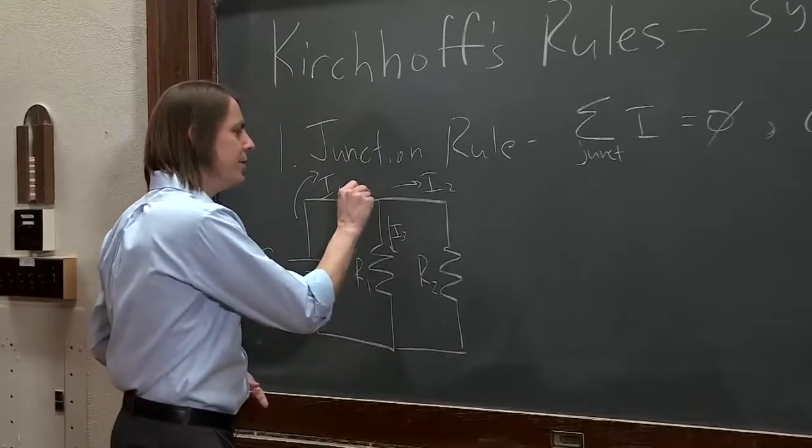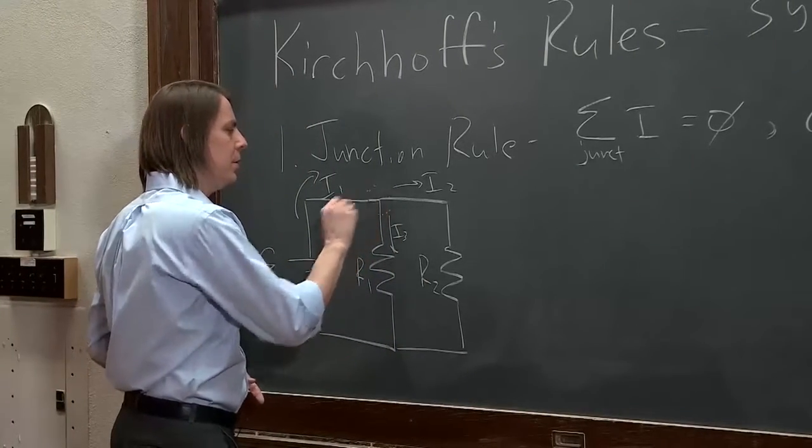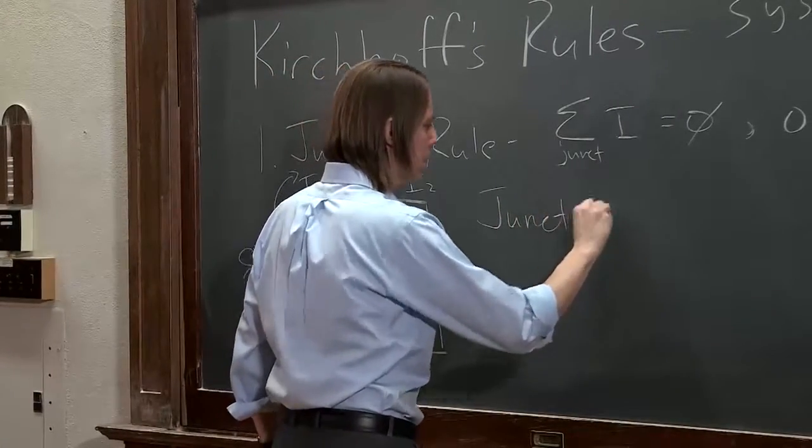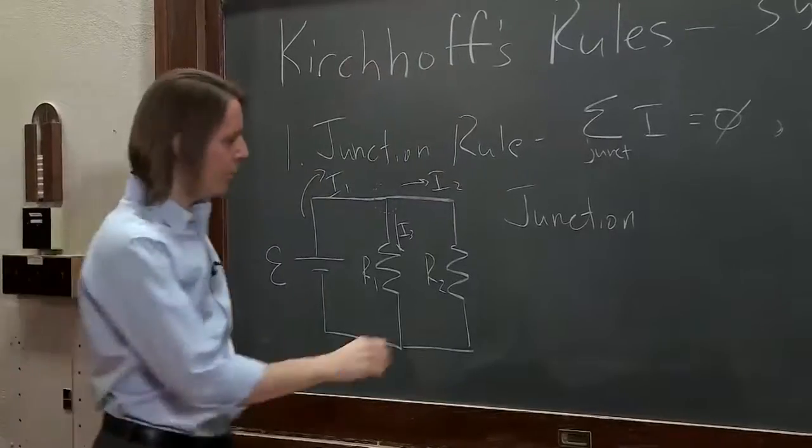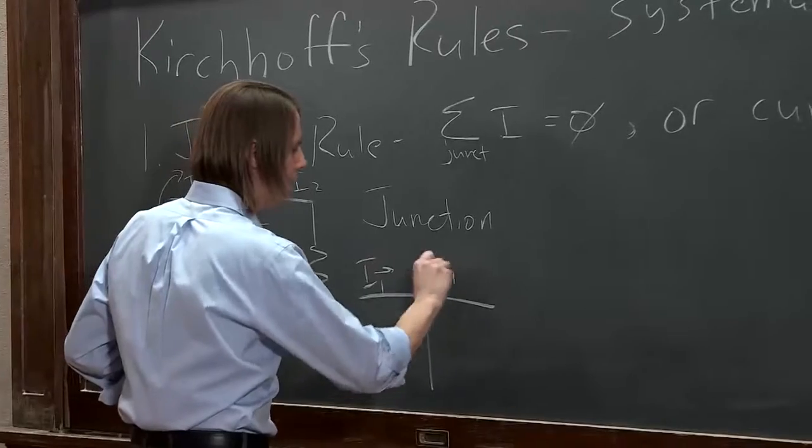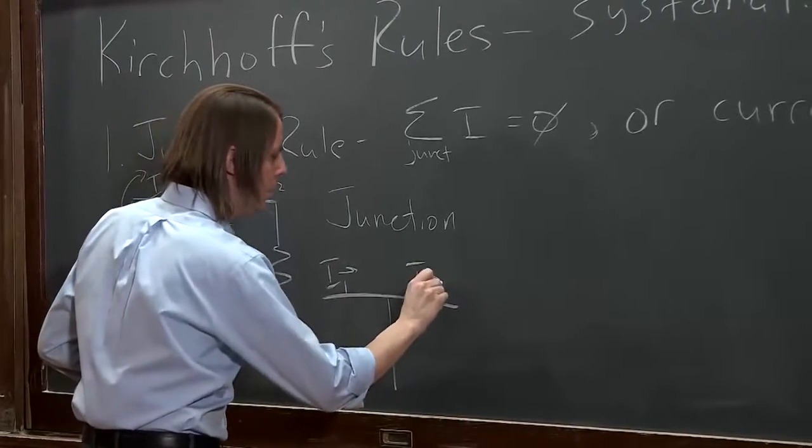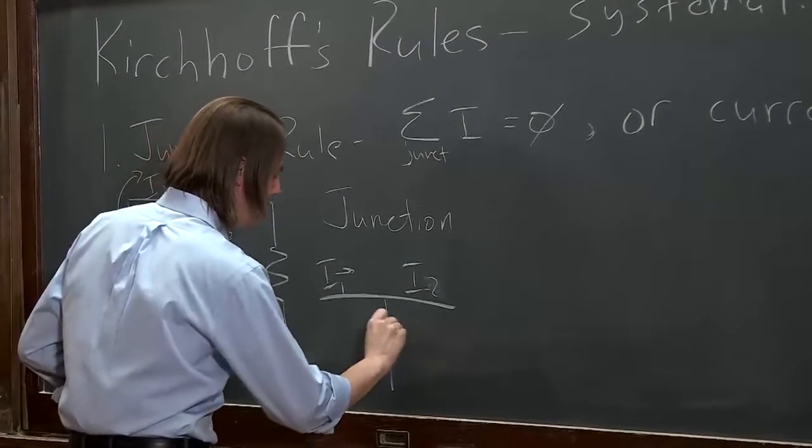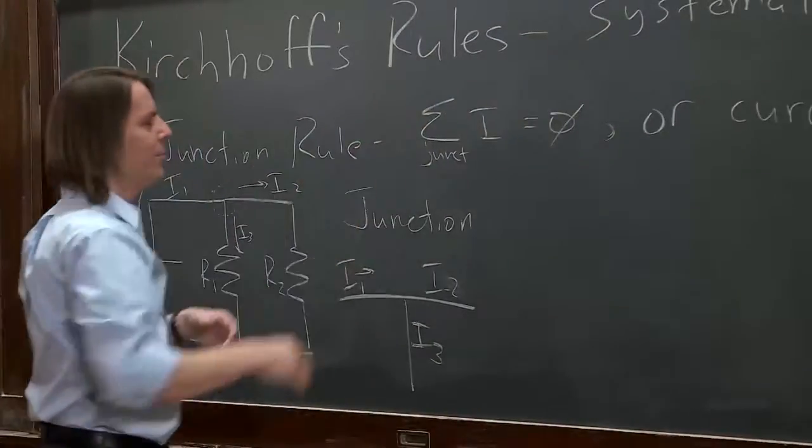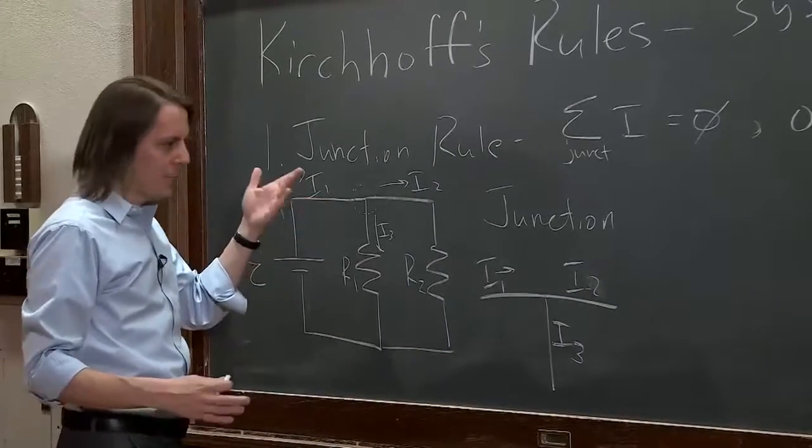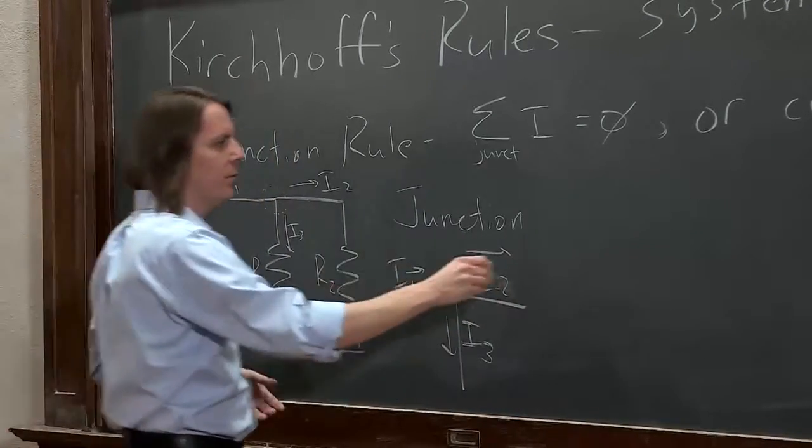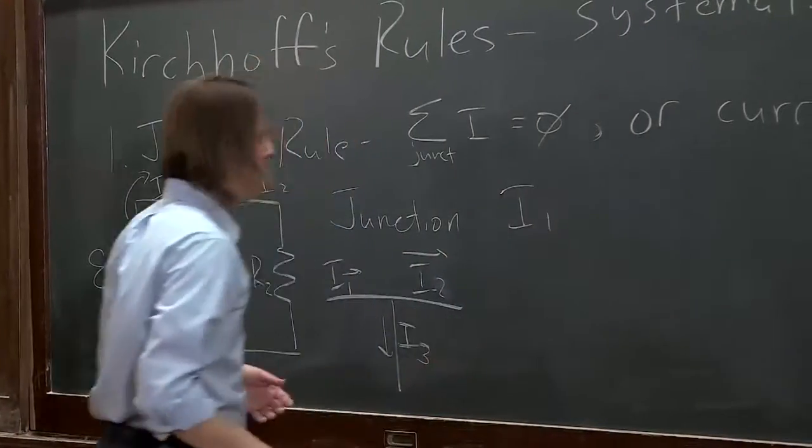So let's look at this little junction right here. That's one of our junctions. At the junction, we can draw it, zoom in on it. We have I1, I2, and I3. You write your sum. You just say, here, let's sum them up. When a current is going into the junction, it's positive. So you'd say, okay, the only one going in is I1. So I1 goes in,